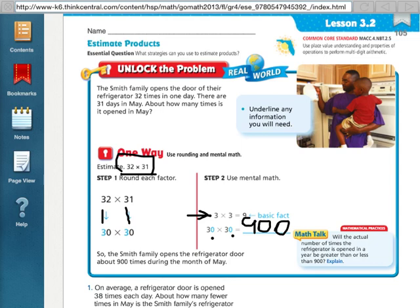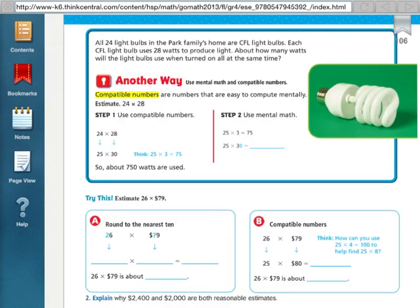Okay, so then let me show you how to do this using compatible numbers. That's our second way to estimate products. Okay, so here we have compatible numbers. This is another way to estimate products for multiplication problems.